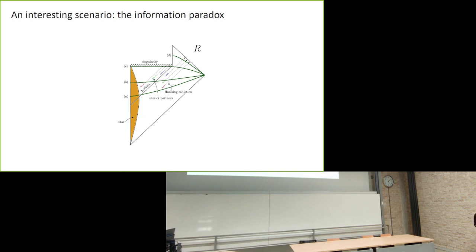A prominent example of why this is interesting is the information paradox: when we have an evaporating black hole and we want to compute the entanglement entropy of the Hawking radiation escaping to infinity.